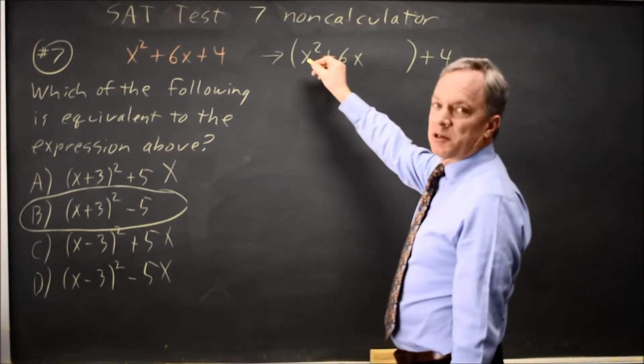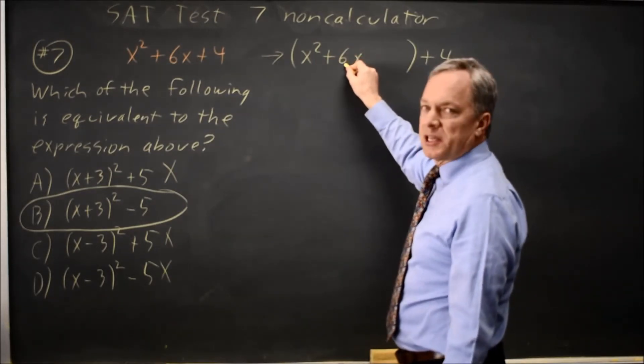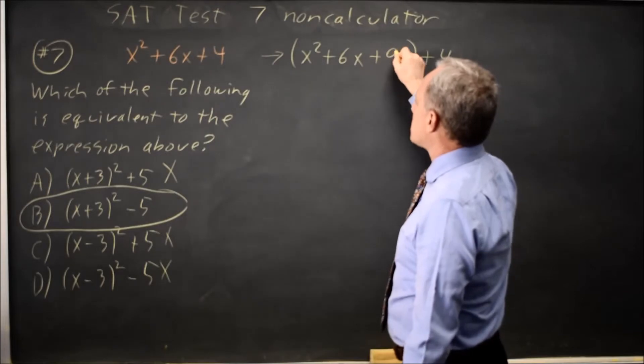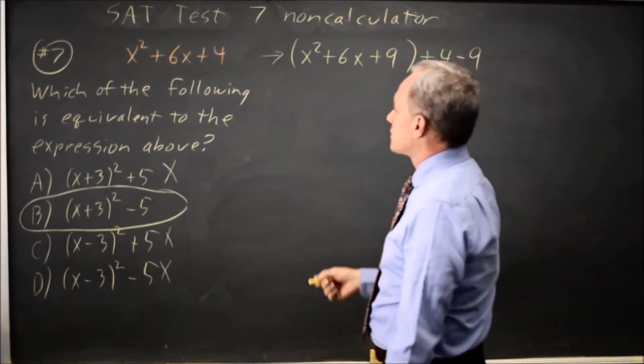To complete the square, since the x squared has a leading coefficient of 1, I'll take half the x coefficient. Half of 6 is 3. Square that I get plus 9. Since I just added 9, I have to subtract 9 to avoid changing the value of this expression.